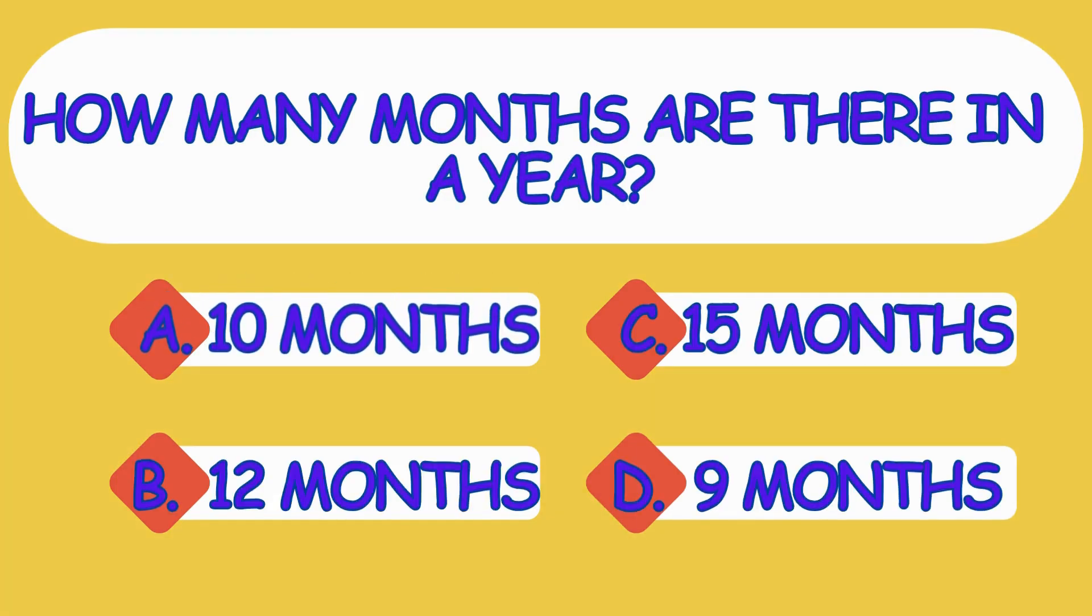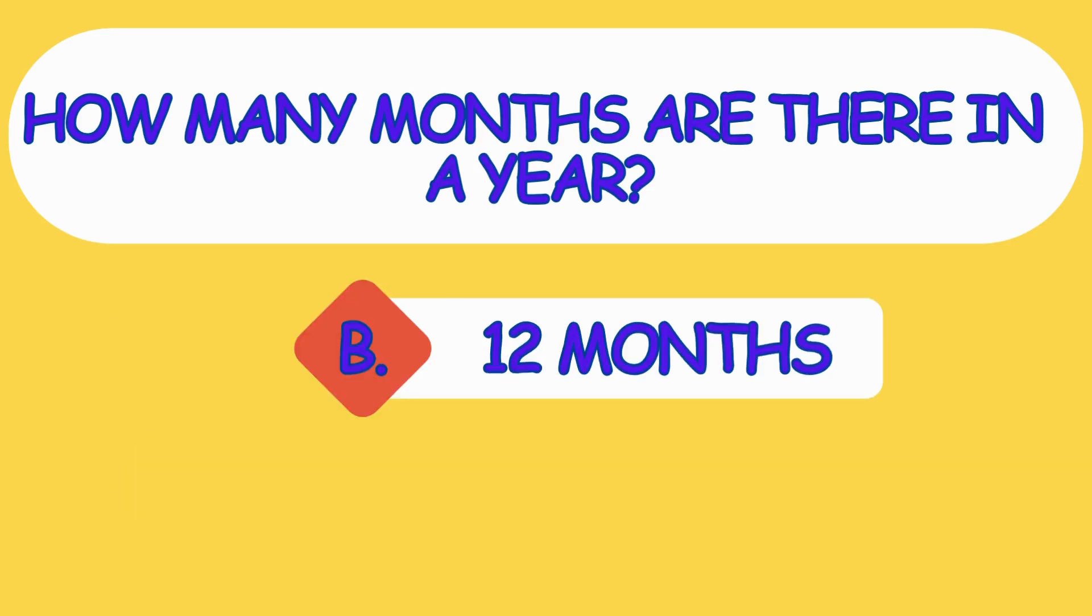How many months are there in a year? A. 10 months, B. 12 months, C. 15 months, D. 9 months. The answer is option B, 12 months.